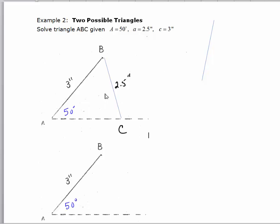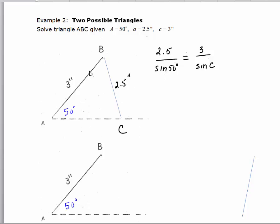So let's first solve the first triangle. We'll set up our ratio of angle A and side A, and angle C and side C. We have 2.5 is to the sine of 50, as 3 is to the sine of C. Setting the cross products equal and dividing gives us sine C equal to 3 times the sine of 50 degrees over 2.5. So C will be the inverse sine of that value.